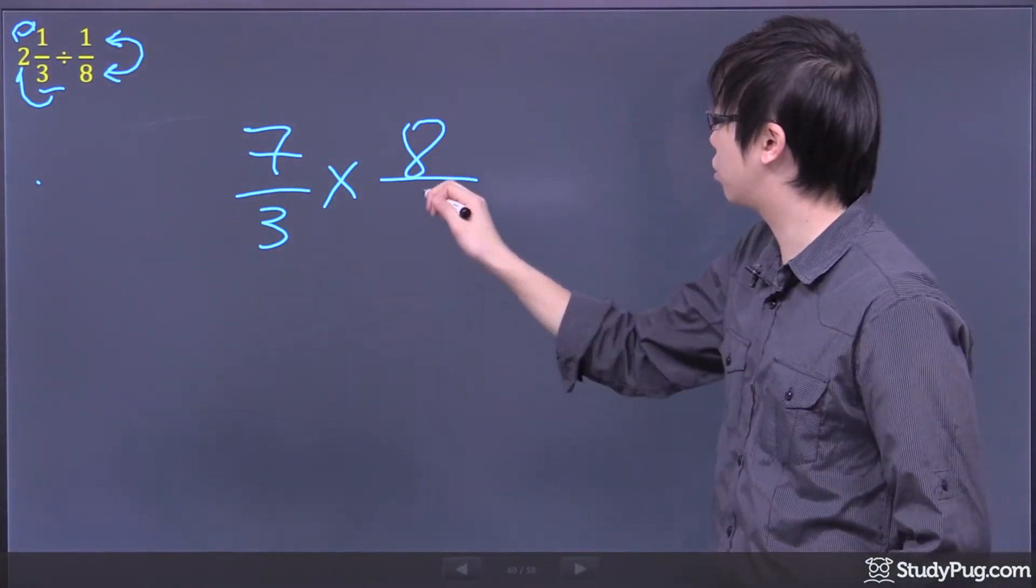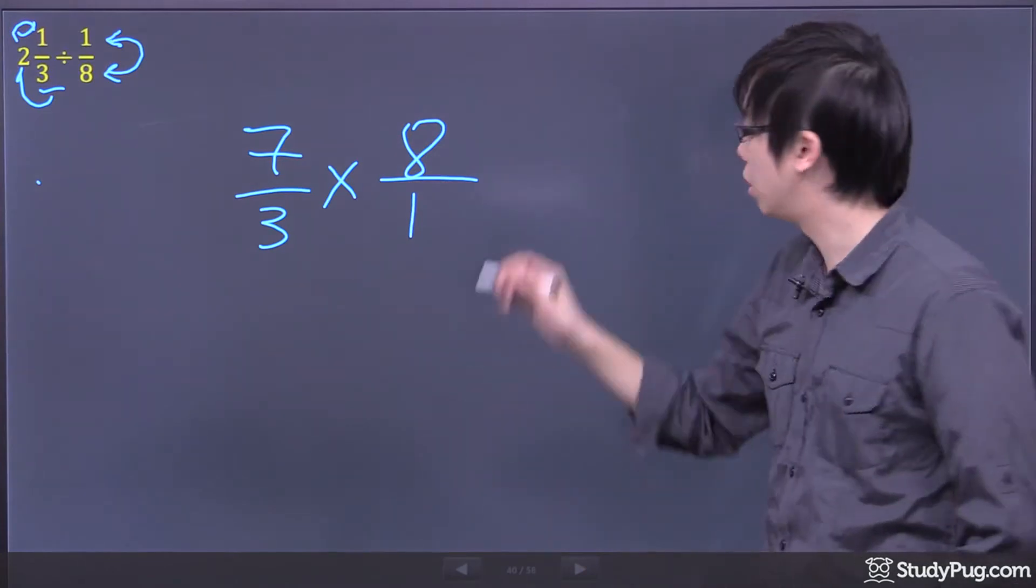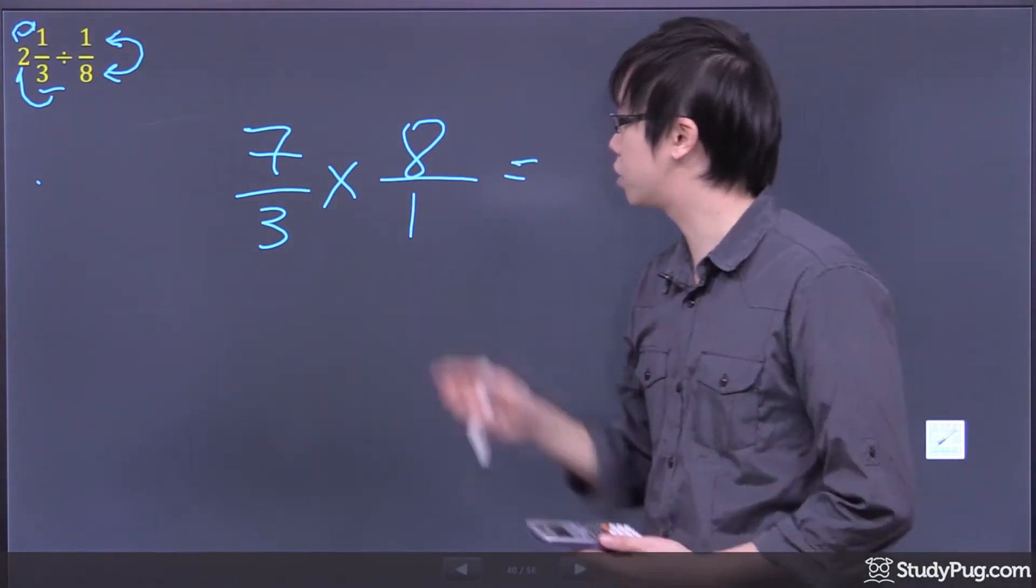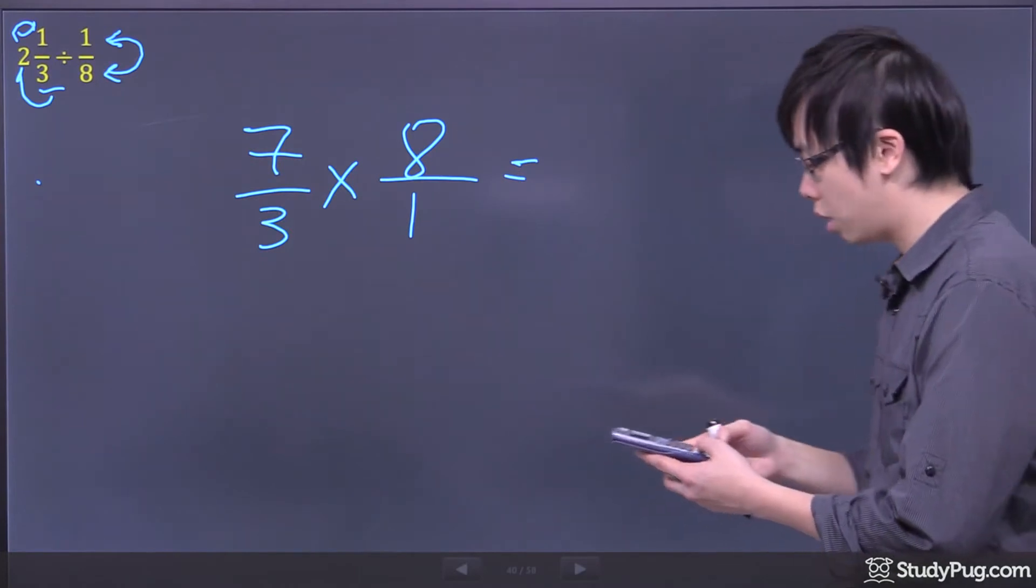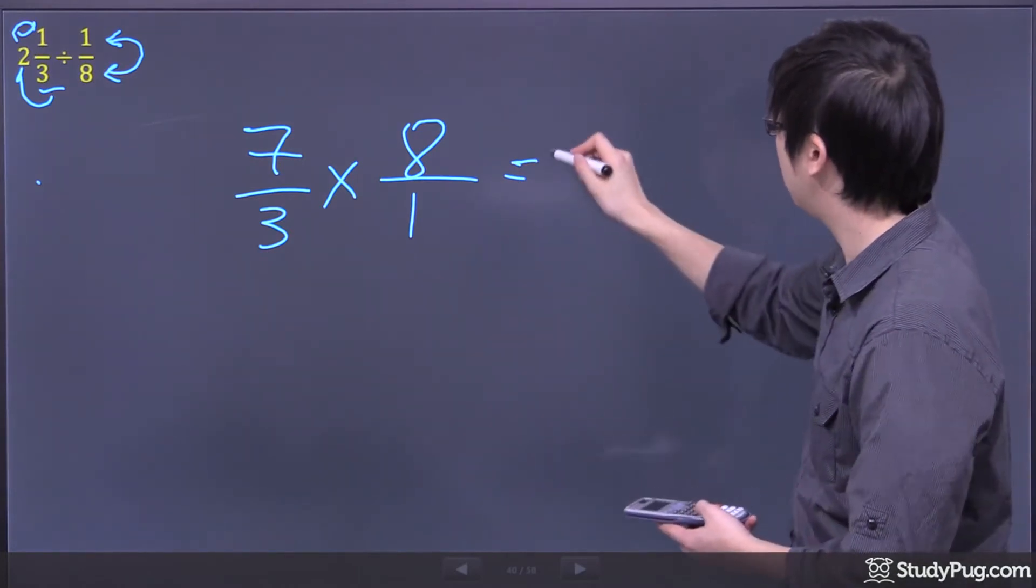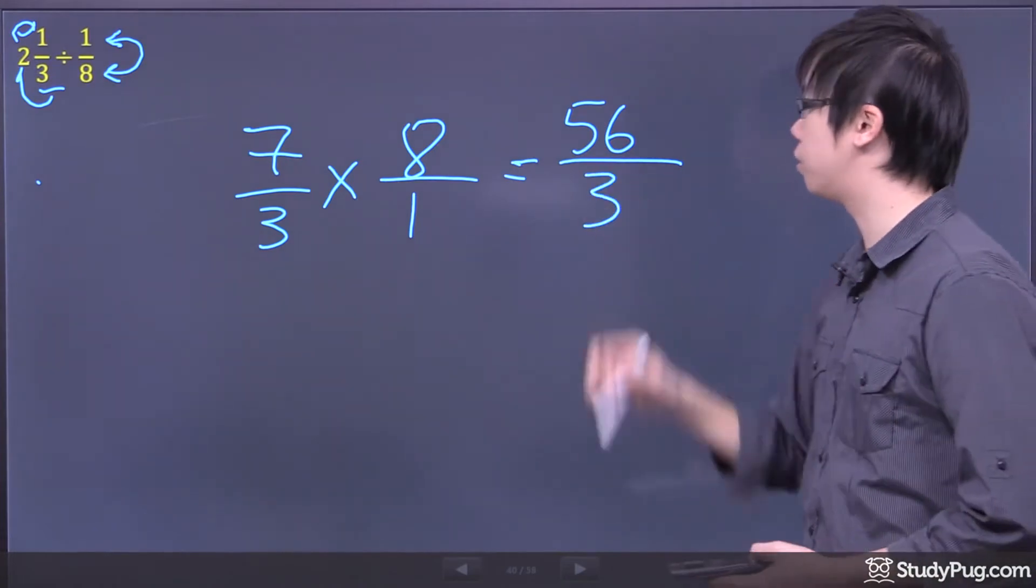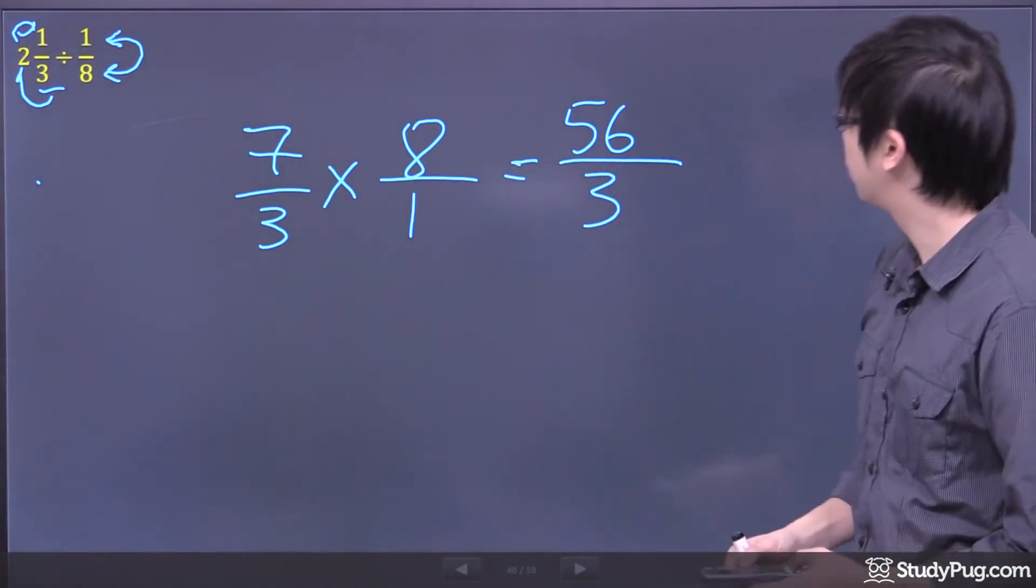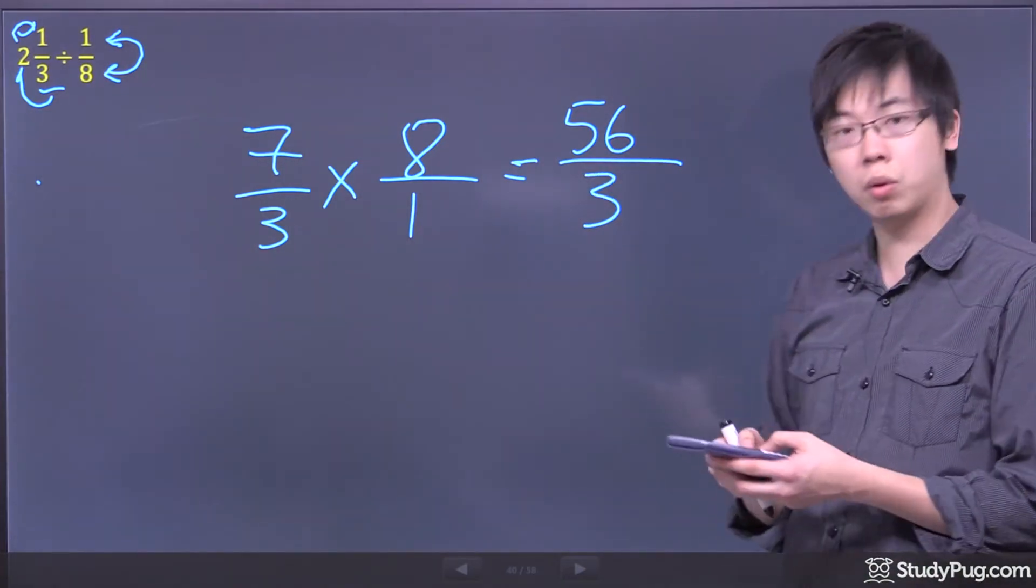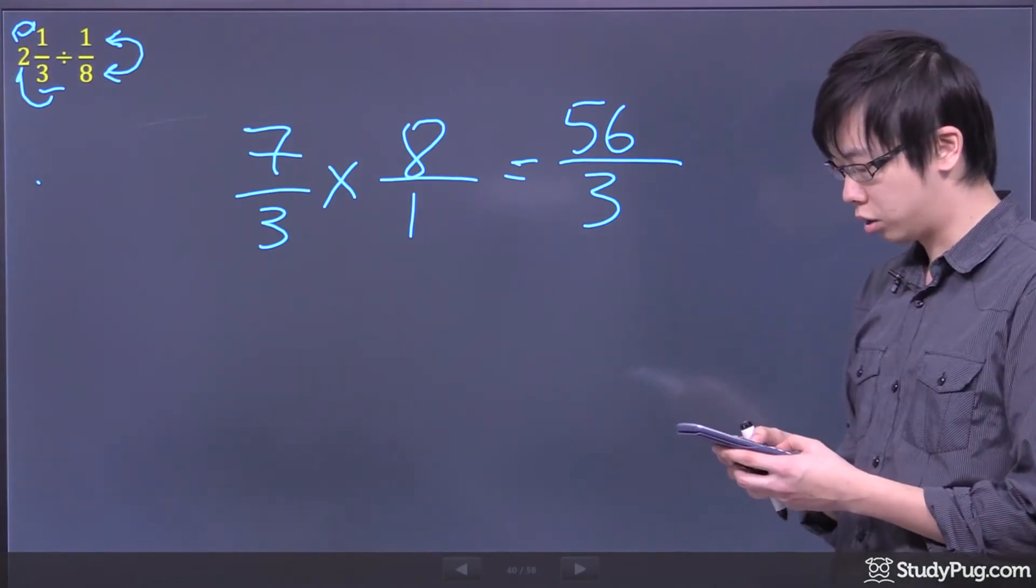So the eight will go to the top and the one will go to the bottom. So the final answer would be just eight times seven across the top, which is 56, and divided by the three underneath. And it looks like a nice number—maybe it will simplify, maybe it won't. Actually, it won't.